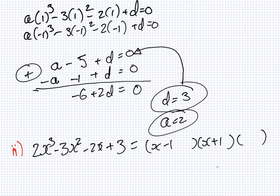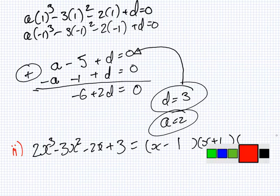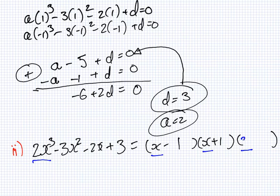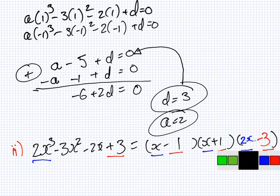The reason I can do it so quickly is because I have two of the factors. So if you look, x multiply x multiply something should make 2x³, so here is 2x. Minus 1 multiply 1 multiply something should make 3. Finished, no need for long division.